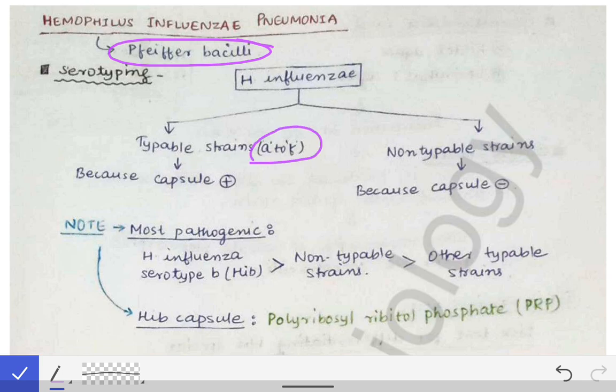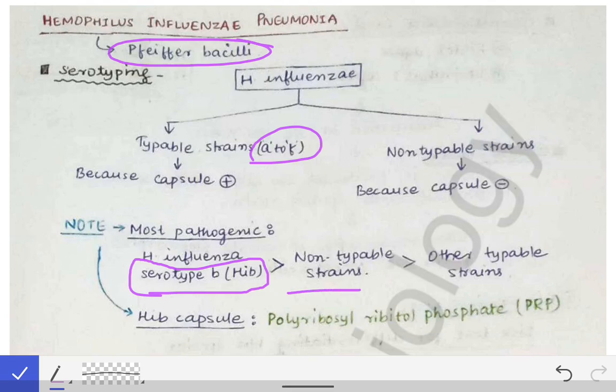If it is a typable strain, the classification is done from A to F. The most pathogenic out of all Haemophilus influenzae strains is serotype B — serotype B is the most pathogenic. After that, the non-typable strains are next most pathogenic, followed by the other typable strains. So pathogenicity decreases: HIb, then non-typable, then typable strains A, C, D, E, and F.